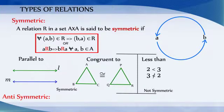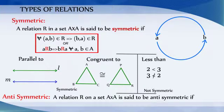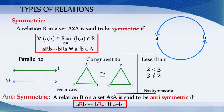Antisymmetric relation: A relation R on a set A cross A is said to be antisymmetric if a relates to b and b relates to a if and only if a is equal to b.